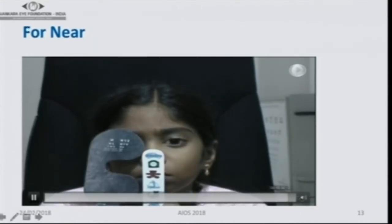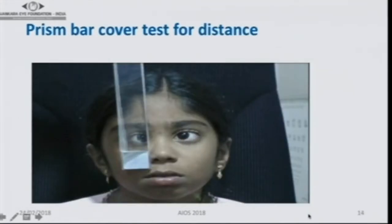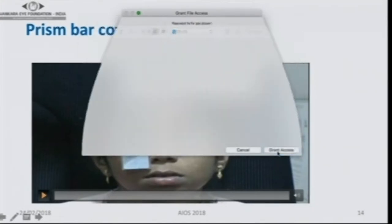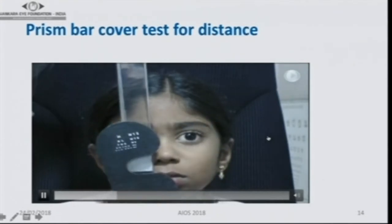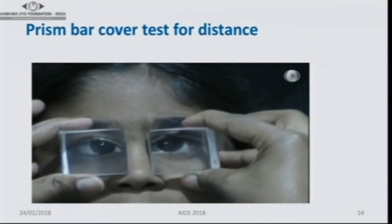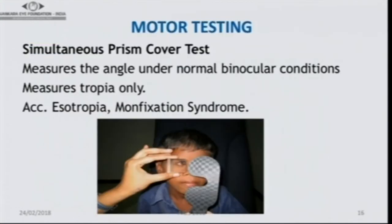You do the alternate cover test and interpret whether the other eye is taking up fixation, using a toy with fine features as the target. You do the same using a prism bar or loose prisms until there is no refixation movement. The simultaneous prism cover test measures the angle under normal binocular conditions, but measures only tropia, not phoria. It is useful in accommodative esotropia and monofixation syndrome. When you do alternate cover test, the underlying squint gets manifested.